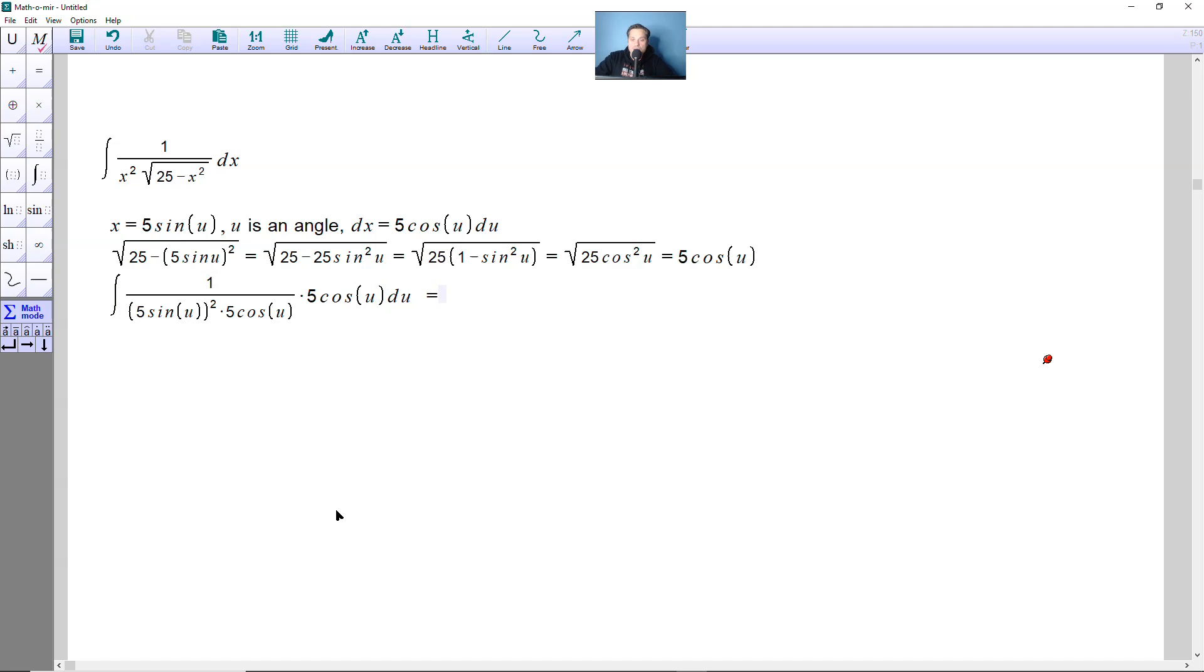And then from here, well, take a look. Let's simplify what we can. Cosine can be canceled with cosine. So for now, that's all we can really do.